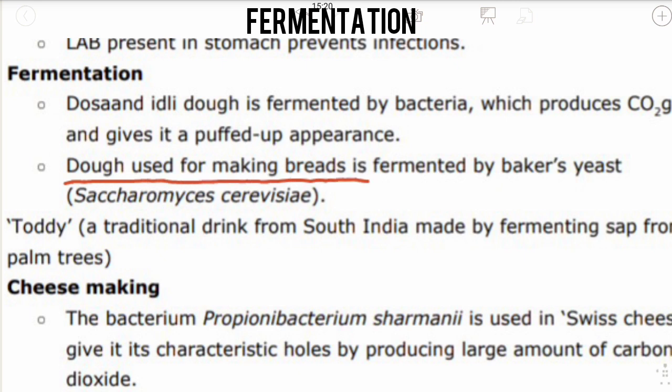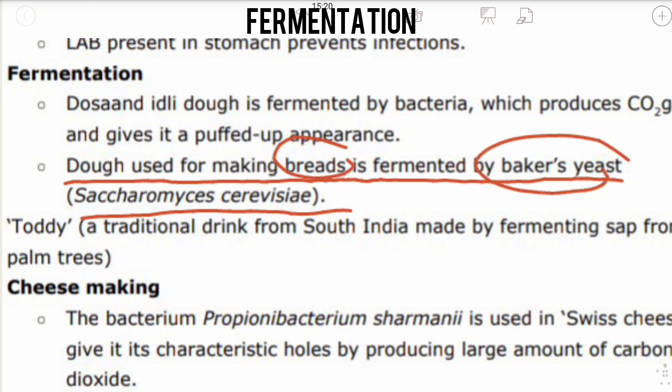Dough used for making breads is fermented by baker's yeast, Saccharomyces cerevisiae. The dough is first prepared and then fermented by baker's yeast to produce breads. Dosa and idli dough is fermented by bacteria which produce carbon dioxide gas and give a puffed-up appearance.